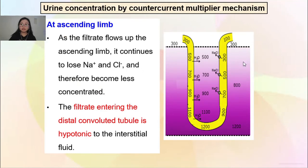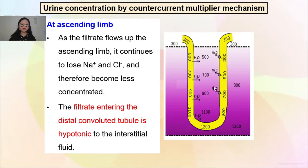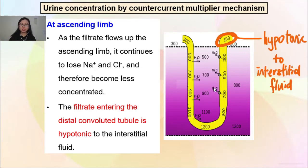As the filtrate flows up the ascending limb, it continues to lose sodium and chloride ions and therefore becomes less concentrated. Dia semakin naik, makin banyak sodium and chloride ions dikeluarkan, dia semakin cair — less concentrated. The filtrate entering the distal convoluted tubule is hypotonic to the interstitial fluid. Bila dia keluar untuk pergi to the next segment — the distal convoluted tubule — dia sudah menjadi hypotonic.